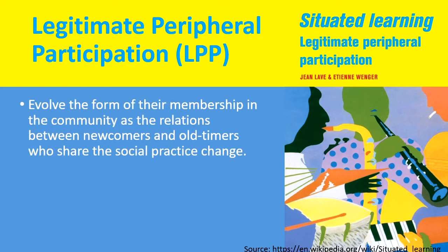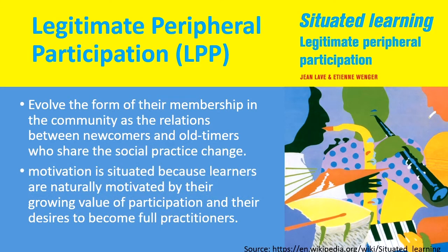Learners evolve the form of their membership in the community as the relationship between newcomers and old-timers who share social practices changes. The exchange of ideas is very important, and motivation in situated learning is very important. Motivation is also situated — learners are naturally motivated by their growing values of participation and their desire to become full practitioners. Because they want to become full practitioners, they are intrinsically motivated, and that motivation keeps them on the path to learn.